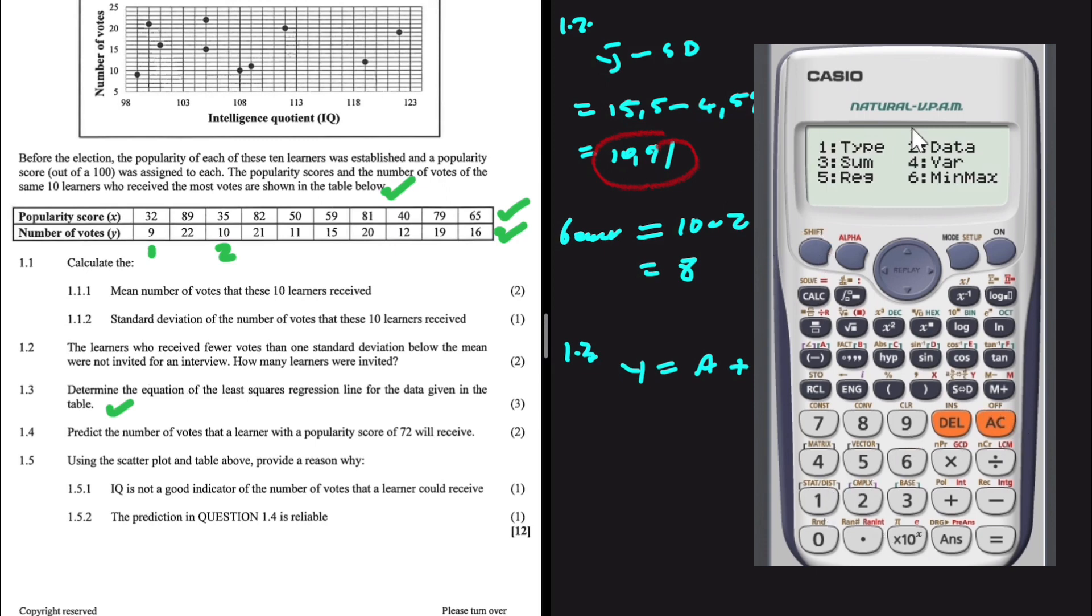Instead of choosing option 4, I'm going to choose option 5, which is regression. So in option 5, I have my variables A and B, which I need. So for the variable A, you press 1, and then press equals 2. As you can see, A is equals to 1.77, rounded off to two decimal places. Let's go ahead and find B.